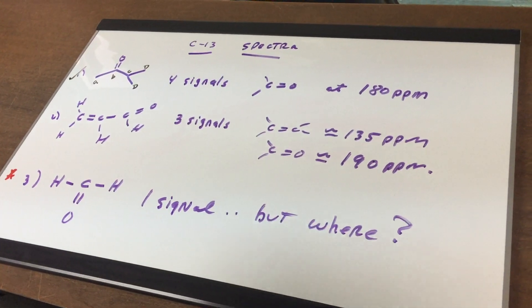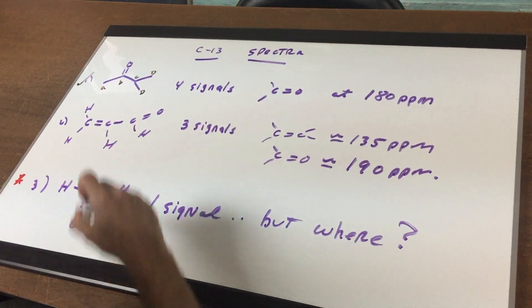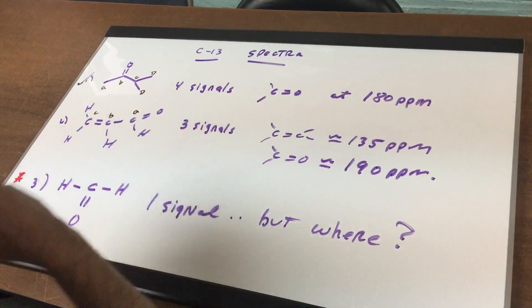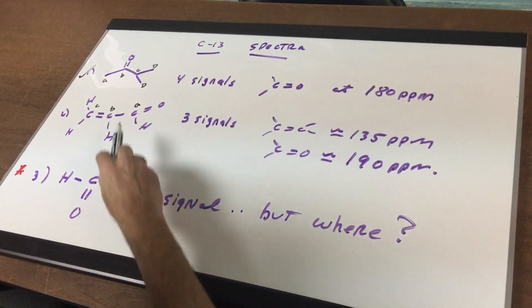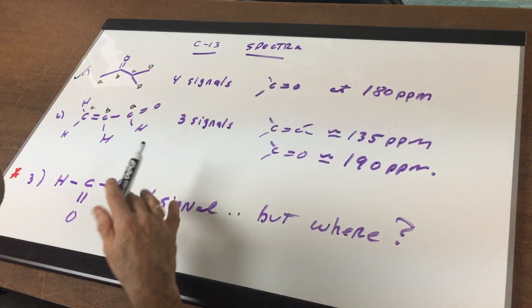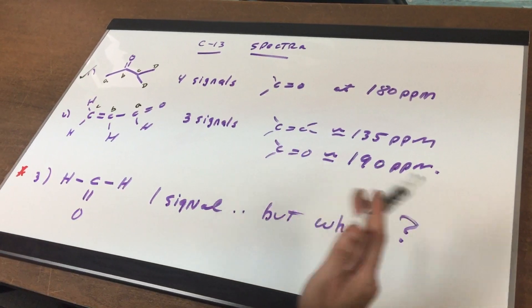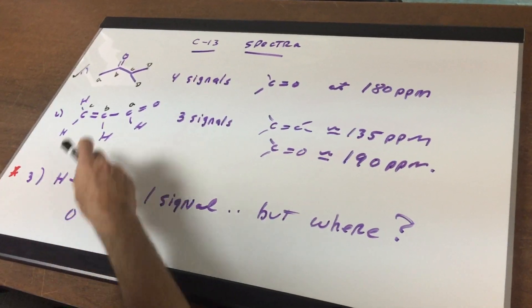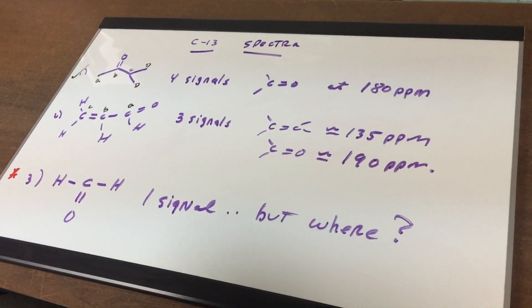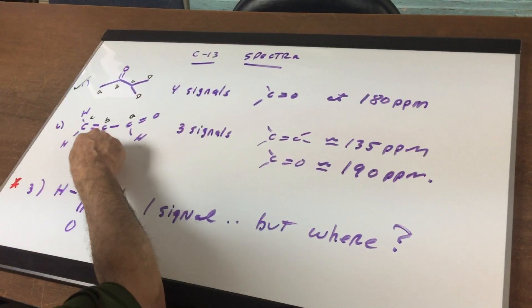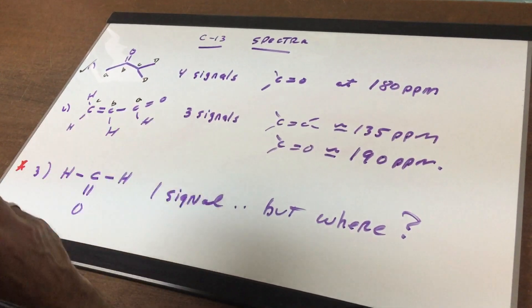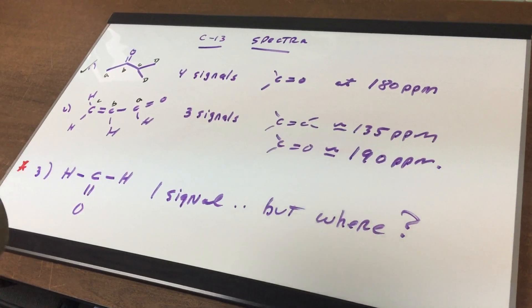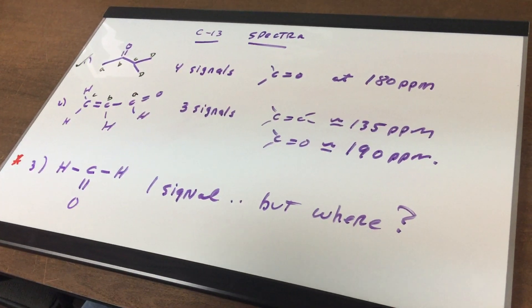Problem number two is propenal. I would get three signals carbon A, carbon B, and carbon C. They're all different there's no symmetry and the carbonyl group would be right around where I would expect at 180, 190, 200 right in that area. Because there's an electronegative element that is directly attached to this carbon to the left of me it would be a little more than 180 so I called it around 190. But the key thing is as long as you got to 180 in your mind you're in good shape.